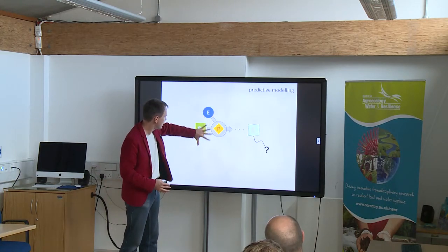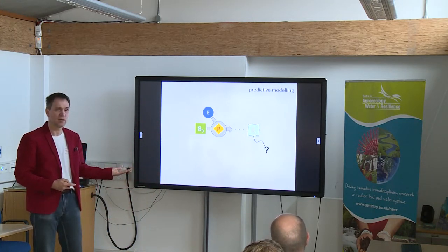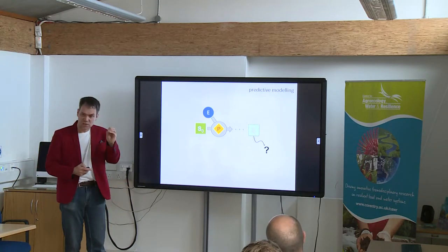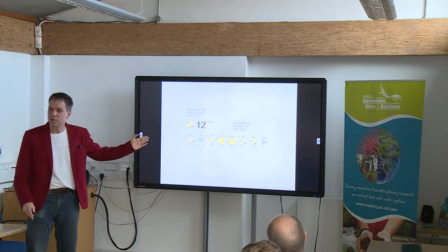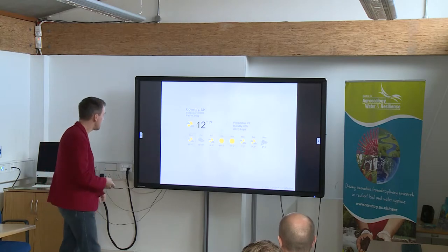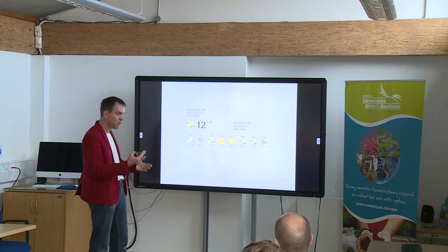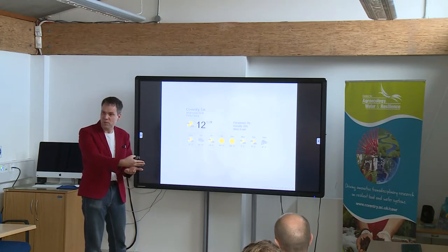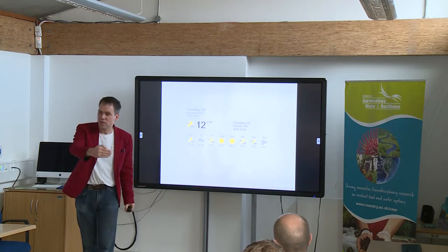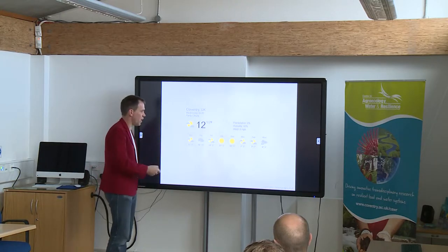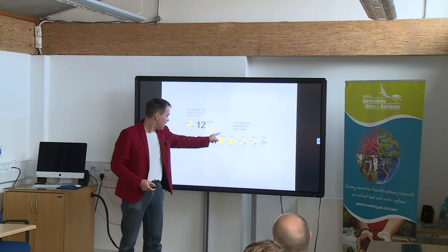If you are confident in all your inputs and in the model, then you can make a prediction about what the future state of the system will be like — and you can make very specific predictions. The most common example of that is weather forecasting. This is a prediction for Coventry for the coming week. We have seven future states of the system, with predictions about what the weather will be like in each. Good day for modelling on Wednesday, and a very nice weekend coming up.